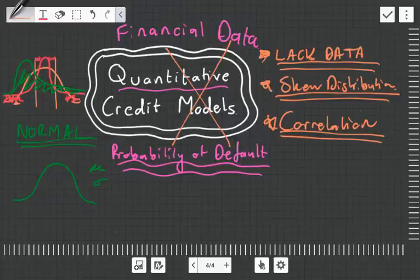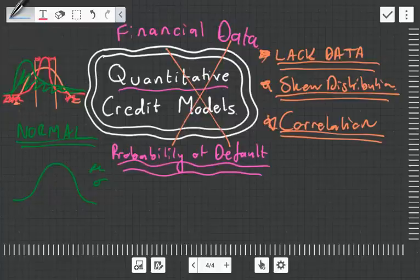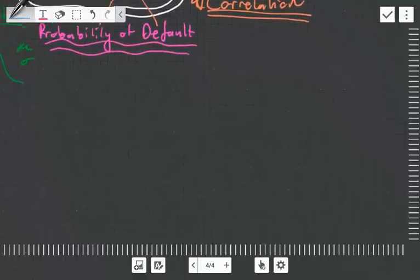Without further ado, we're going to be looking at five quantitative credit models. I'm just going to be giving a very brief overview — not going to be going into a lot of detail, because I'm not motivated to go into detail on something that is broken. Let's get into some of the quantitative credit models.